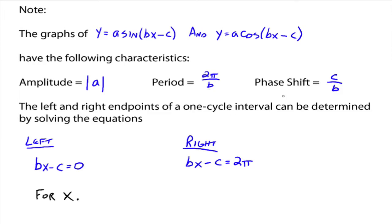Now the phase shift is going to be c divided by b. That's what's going to move it right or left. So the phase shift is c divided by b. Now, the left and right endpoints of a one-cycle interval can be determined by solving the following equations. If you take that argument, bx minus c, remember cosine and sine usually go between 0 and 2 pi for a one-cycle interval. It starts at 0, ends at 2 pi.